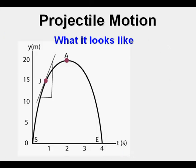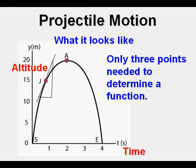Here's what a graph of projectile motion looks like. Here we have on the horizontal axis time, usually in seconds. On the vertical axis we have altitude, usually in meters or feet. Only three points are needed to determine a function. If you can look at a graph and just pick out three points, you'll be able to use your calculator to find what that function is using the stat calc 5 option.